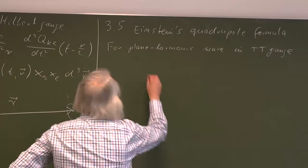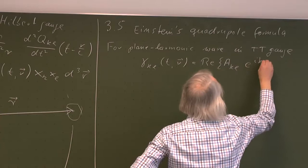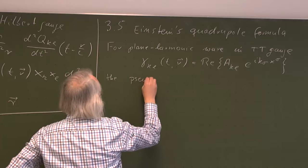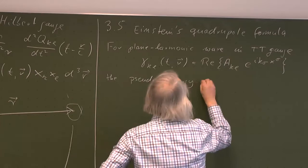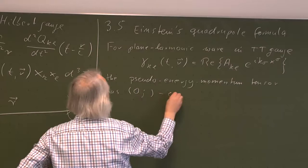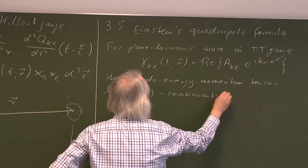But for plane harmonic waves, we have this additional gauge condition. We have to keep this in mind. So our metric perturbation was something like a plane harmonic wave — complex amplitude — e to the i k_sigma x^sigma. That's the usual phase of a plane harmonic wave. And we calculated the pseudo energy-momentum tensor. We calculated only the T^0J — the mixed space-time components — because that's the only thing we need. And I did a time average. This was the last formula I had on the board.